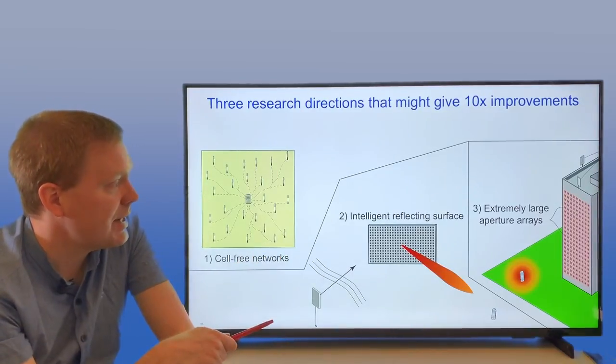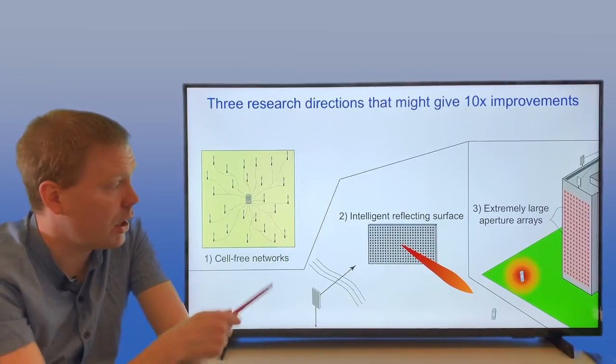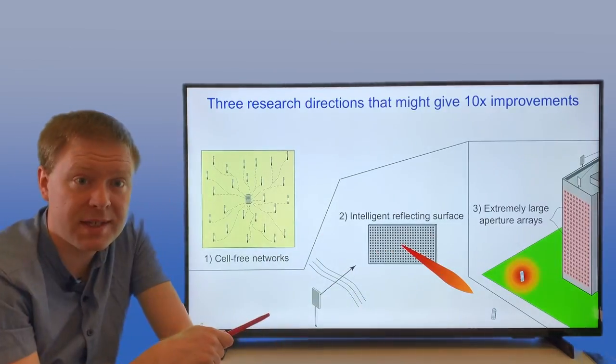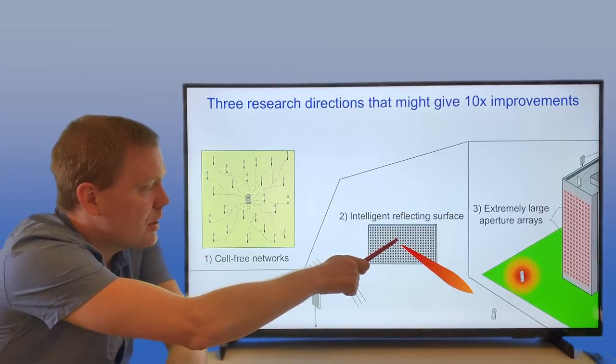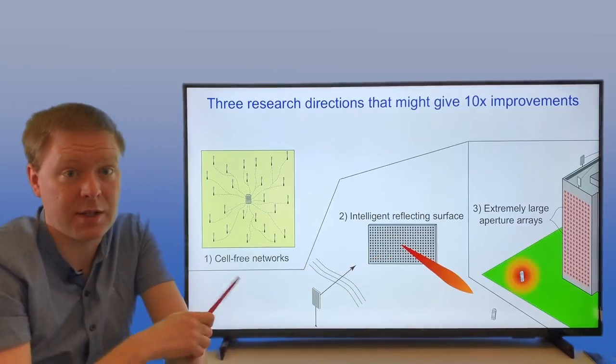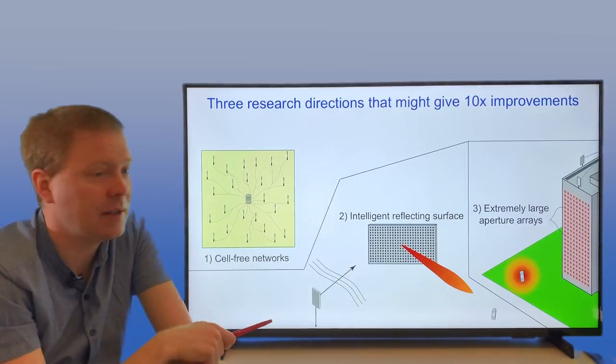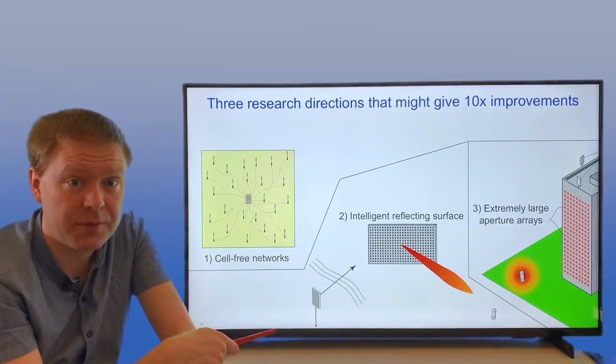Then we have the concept of intelligent reflecting surfaces, which are large MIMO-like surfaces where the signal that is incident on it is going to be reflected towards a particular user in the form of a beam. This can be an almost passive type of surface.